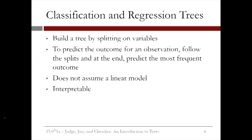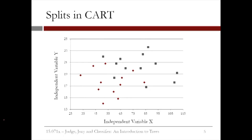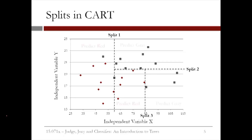Let's look at an example. This plot shows sample data for two independent variables, x and y, and each data point is colored by the outcome variable — red or gray. CART tries to split this data into subsets so that each subset is as pure or homogeneous as possible. The first three splits that CART would create are shown here. The standard prediction made by a CART model is just the majority in each subset.